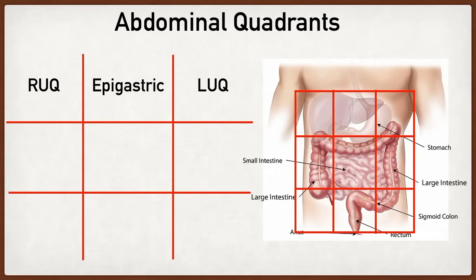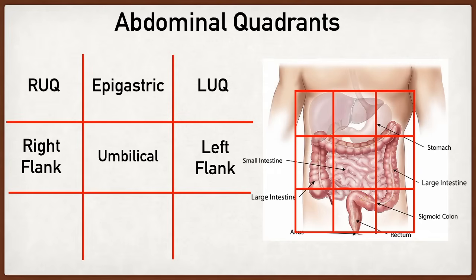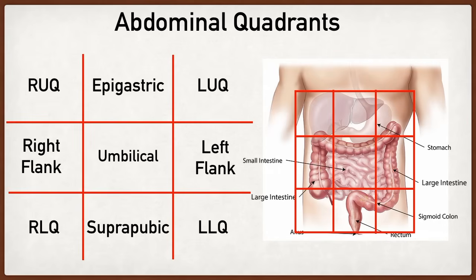Moving on to the second row, which represents the midsection of the abdomen, we have the right flank, also known as the right lumbar region. Then we move over to the umbilical region, and lastly we have the left flank, also referred to as the left lumbar region. The third row represents the lower or inferior portion of the abdomen, so we have the right lower quadrant, also referred to as the right iliac region, then the suprapubic region — less commonly referred to as the hypogastric region — and lastly the left lower quadrant, also referred to as the left iliac region.